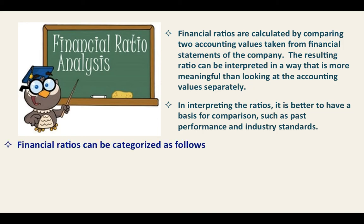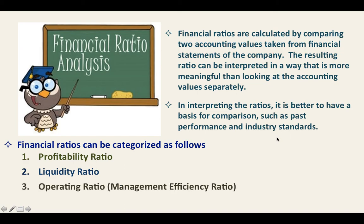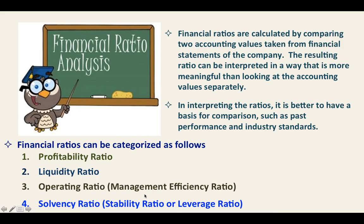Financial ratios can be categorized as follows: the first is profitability ratio; the second is liquidity ratio; the third is operating ratio, also called management efficiency ratio; and the last one is solvency ratio, also called stability ratio or leverage ratio.